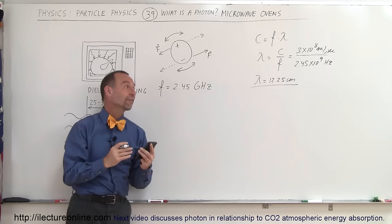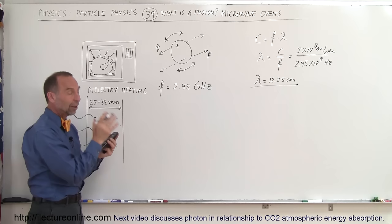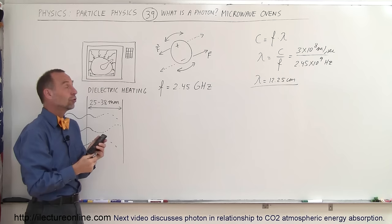So lambda equals 12.25 centimeters. That is the wavelength in a microwave oven that's ideal for heating up food because that wavelength microwave will have the exact frequency required to impart the energy onto the photon.